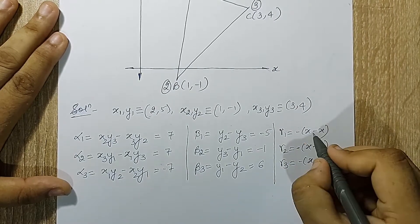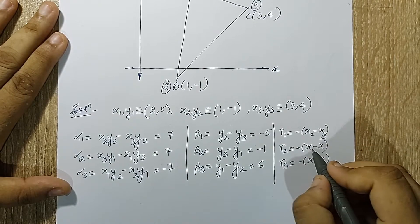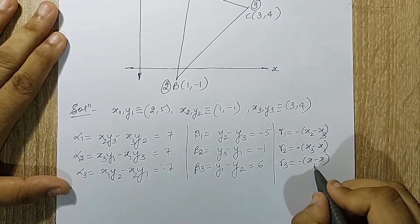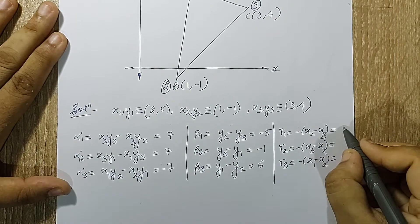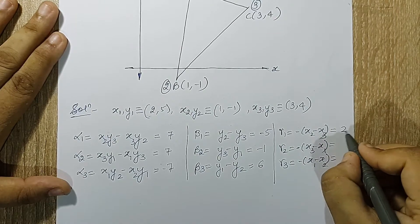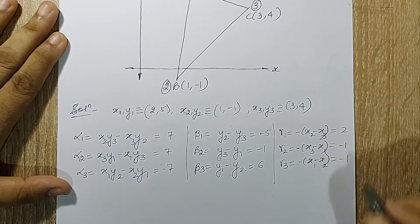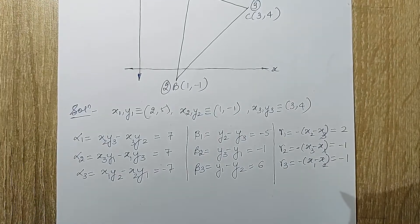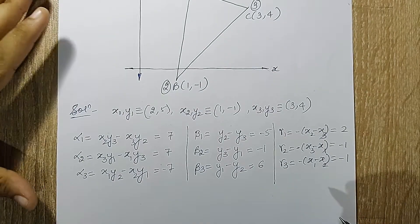The gamma term is a subtraction of x terms with a negative sign outside. The subscript pattern follows 1-2-3, 2-3-1, and 3-1-2. When I solve this I get 2, minus 1, minus 1. So I have very easily calculated the alpha, beta, and gamma terms.